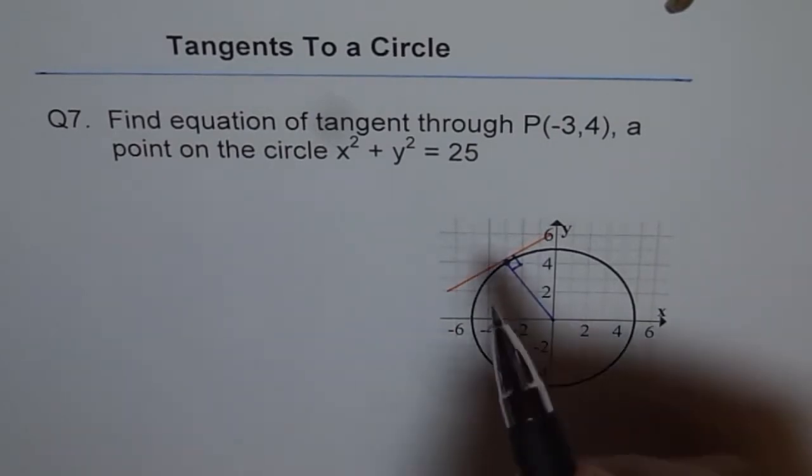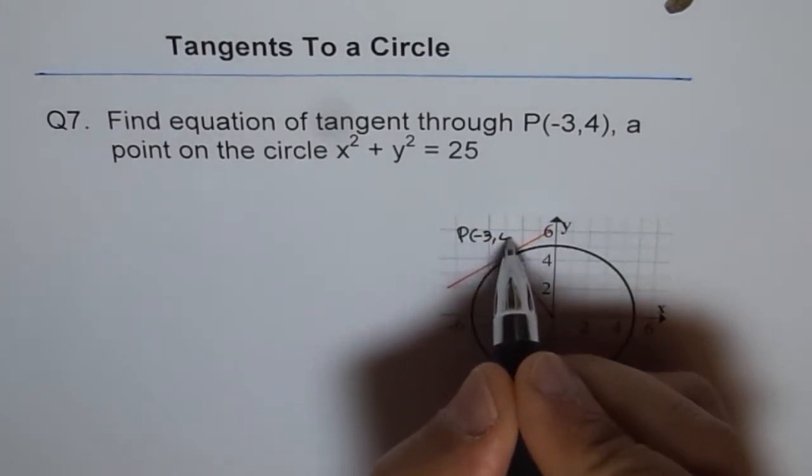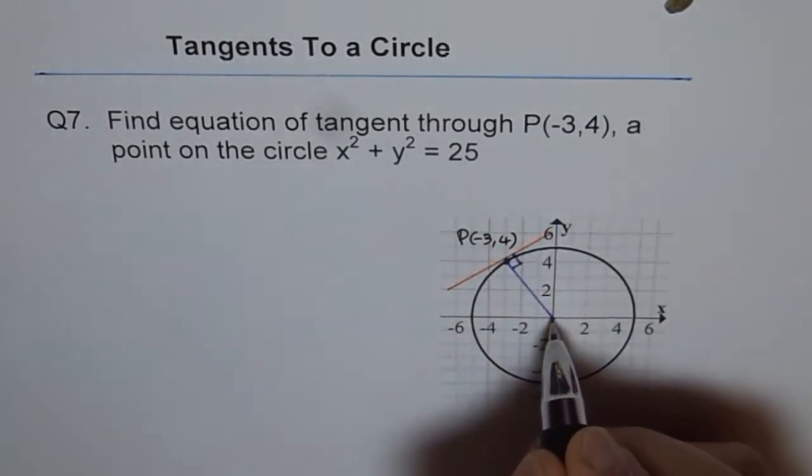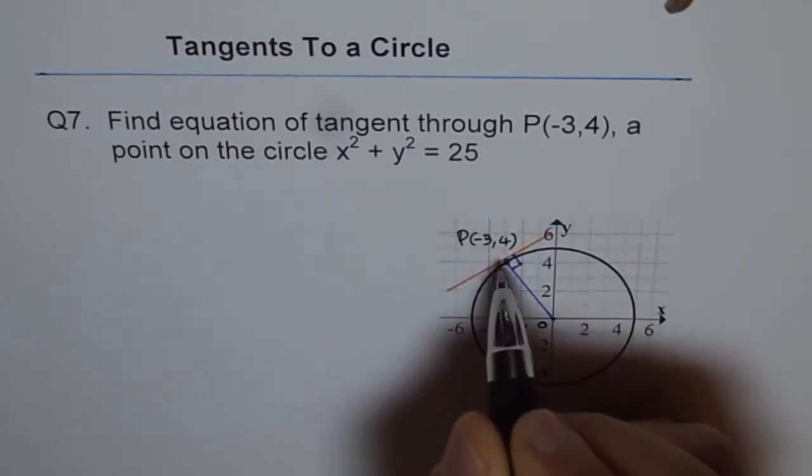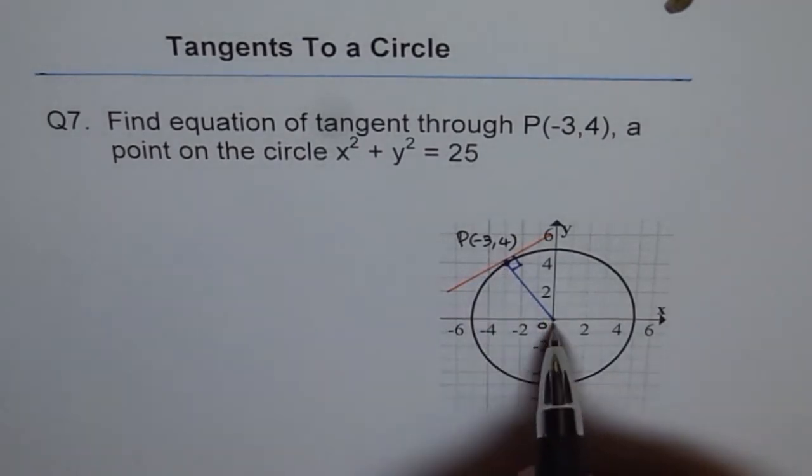Now, we know that this point is (-3, 4). And the point in the center is (0, 0). So that is our origin O and this is the point P. So what we can do is, given these two points, we can find slope of the radius.